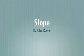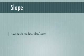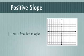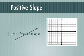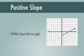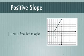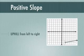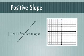Slope is how much your line tilts or slants. If you're looking at a positive slope, it's going to be a line that goes uphill from left to right. These are examples of positive slopes. Some are steep, some are not so steep — still uphill from left to right.